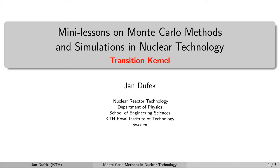Welcome back. So far we have been studying the general Monte Carlo methods. From now on we'll be studying the Monte Carlo methods for neutron transport and reactor physics simulations. In this mini lesson we will learn about how to sample the distance between two neutron collisions. When we want to simulate a neutron history, one of the basic random variables we need to sample during the Monte Carlo simulation is the distance between collisions.